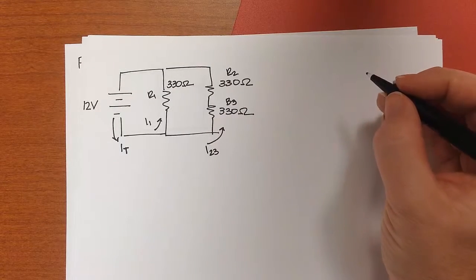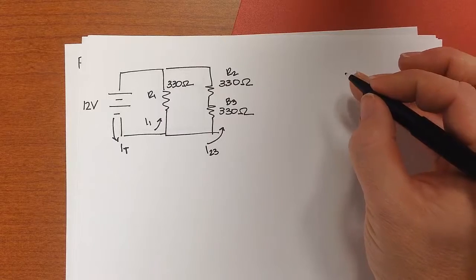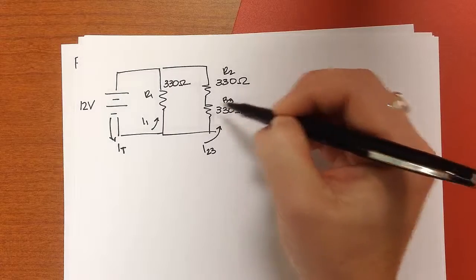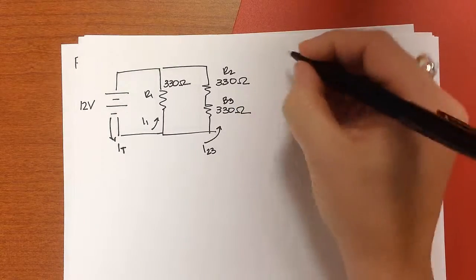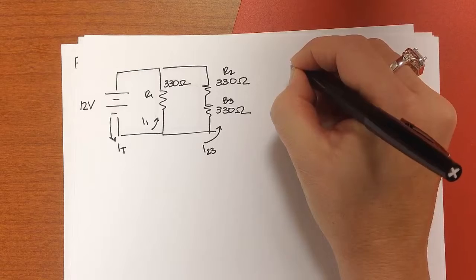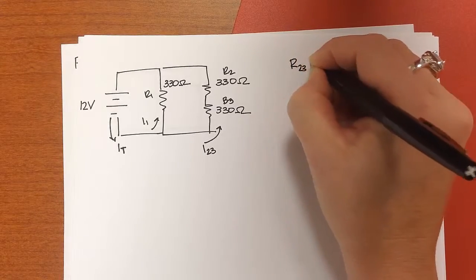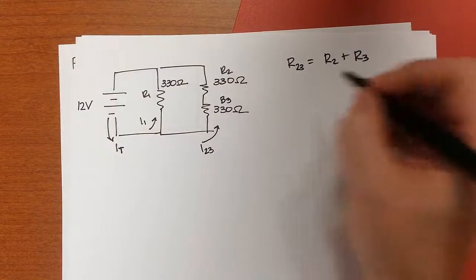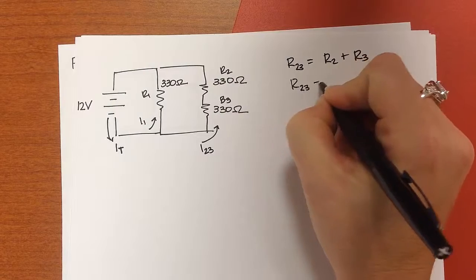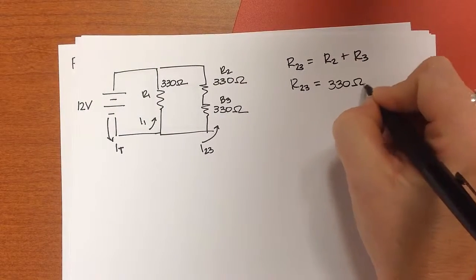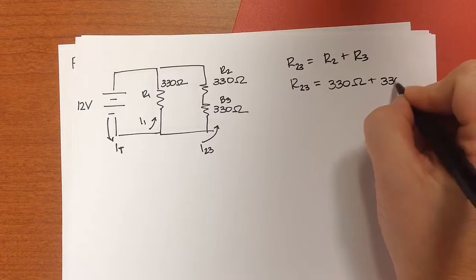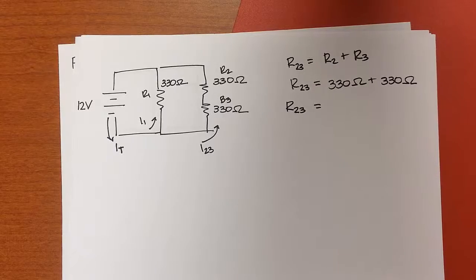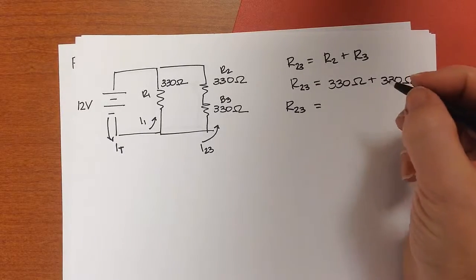So we have to start by kind of combining this circuit down. So let's start by looking at how we would do that. We're going to start here at the back, and we need to combine these two series resistors first. And to get R23, it's going to be R2 plus R3. So R23 is going to be 330 plus 330. And on a good day, I think that is about 660.